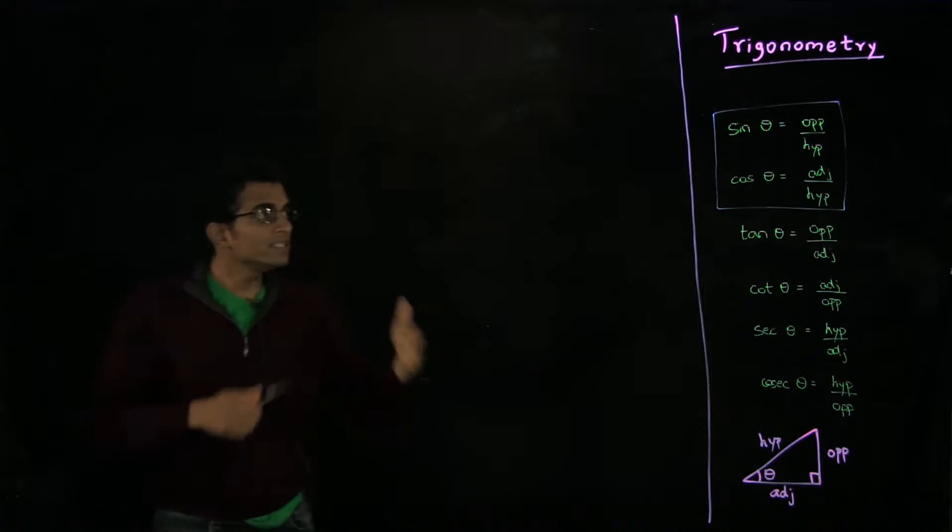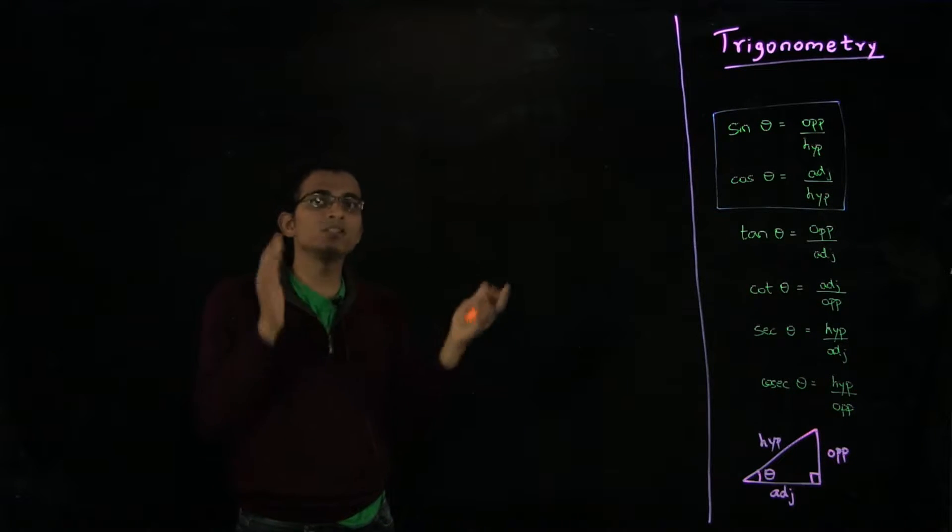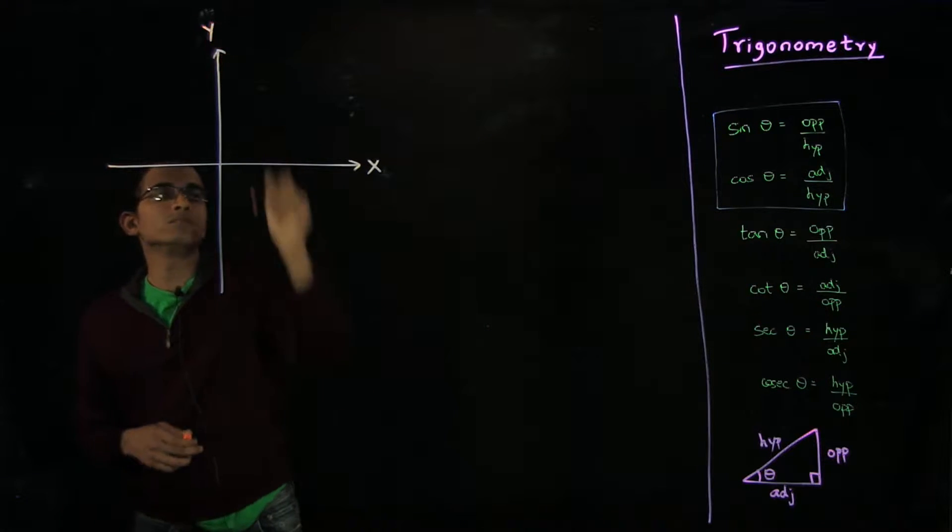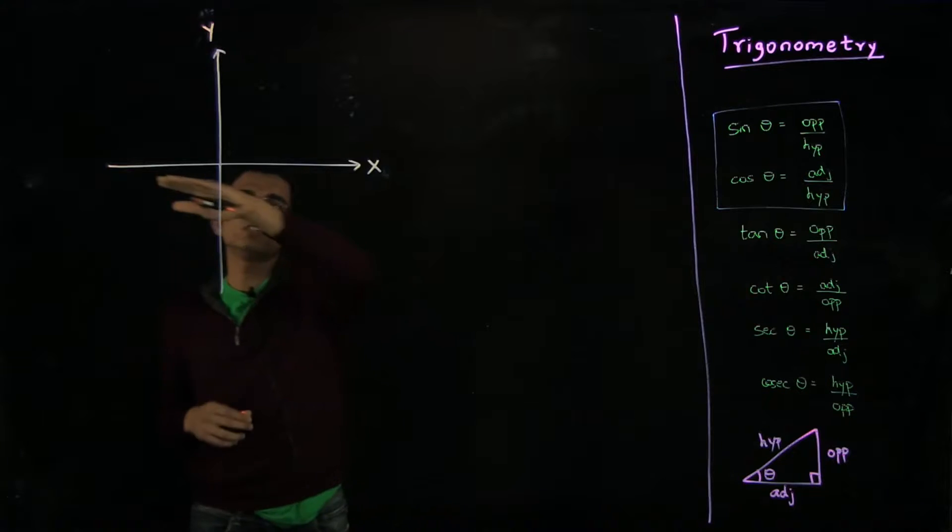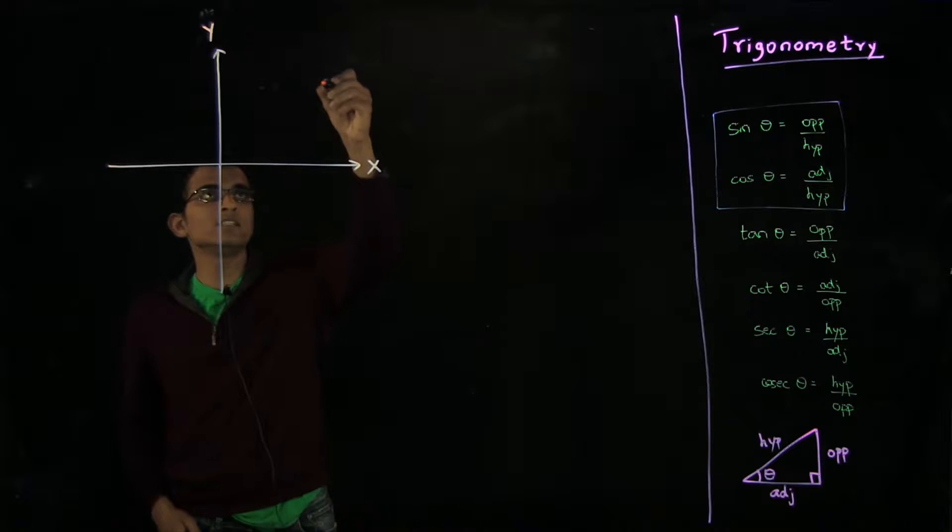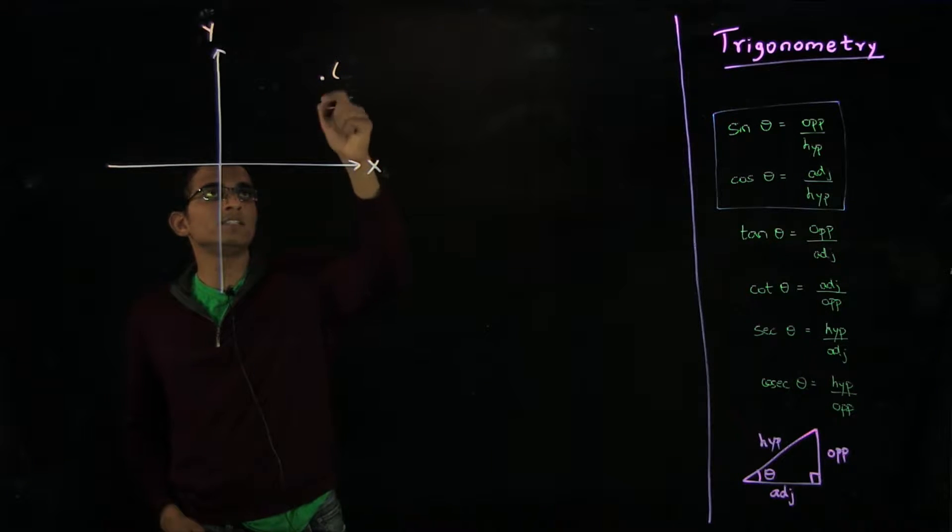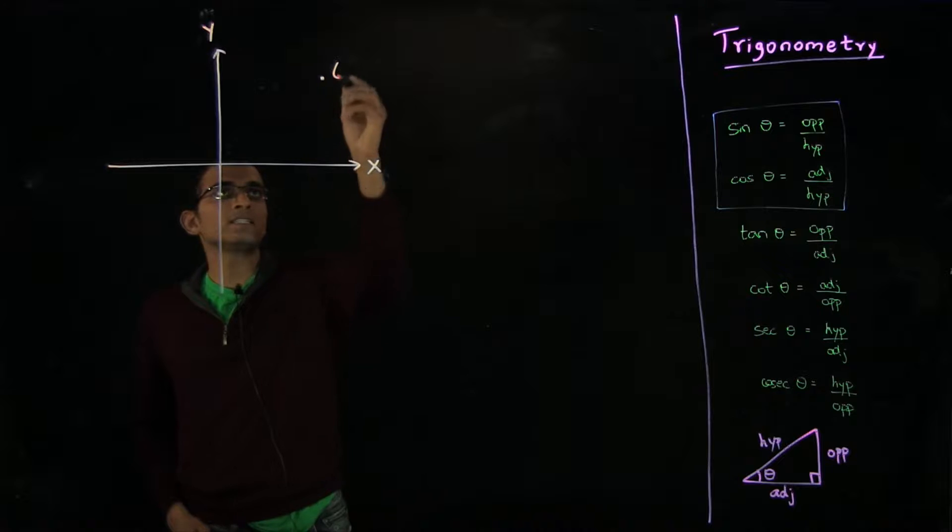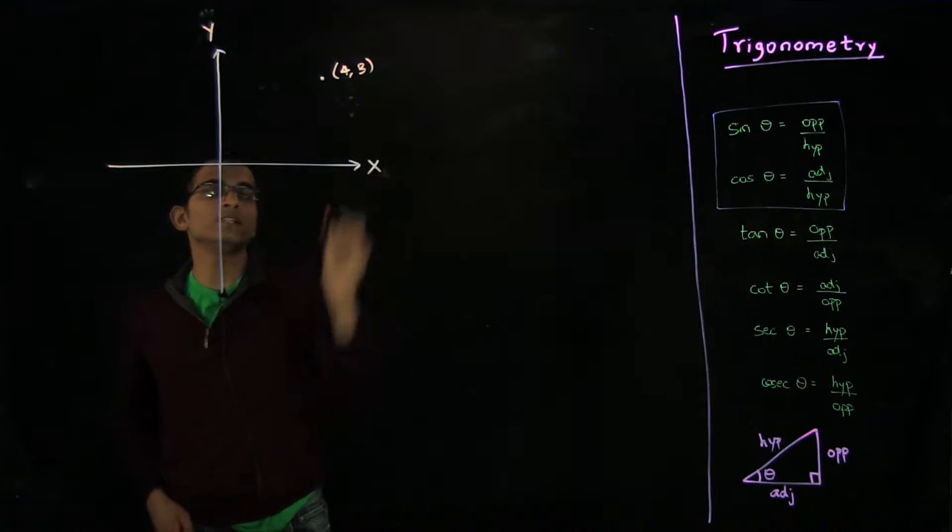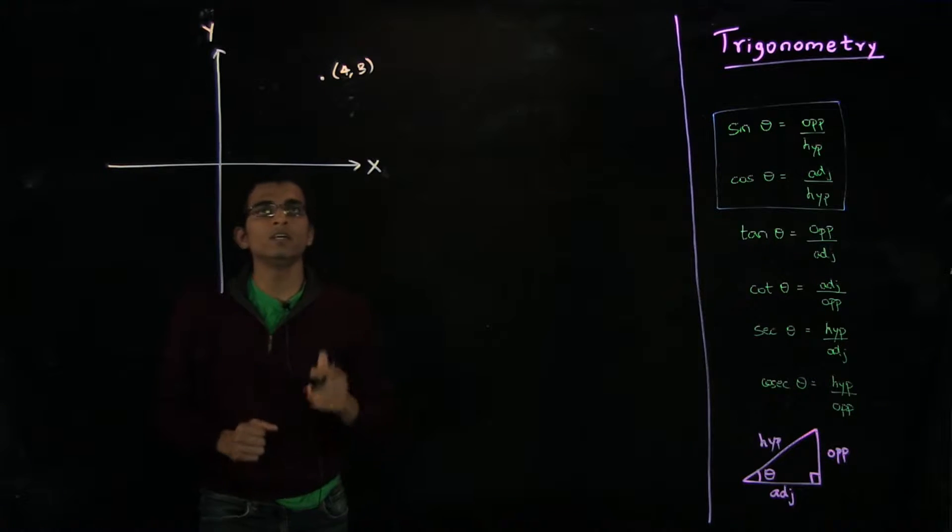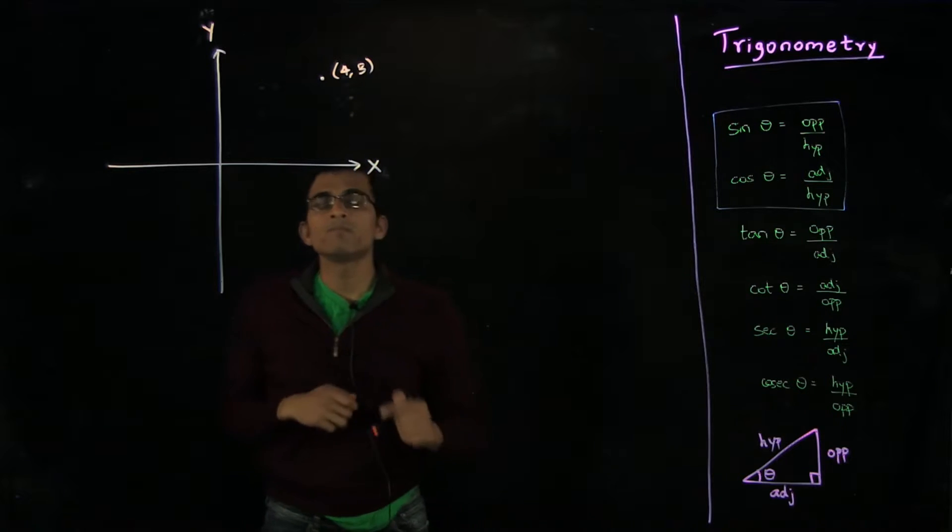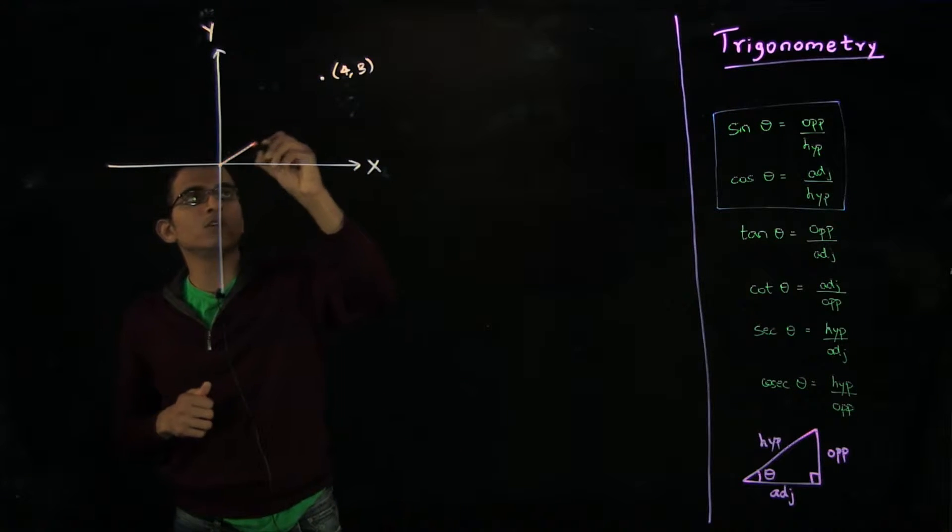So in order to generalize these trigonometric ratios to angles beyond 0 and π/2, it will be helpful to think in terms of the coordinate system which has the x axis and the y axis. You address points in the plane by two numbers: one is its projection on the x axis and its projection on the y axis. So all points on this entire plane can be addressed by two numbers.